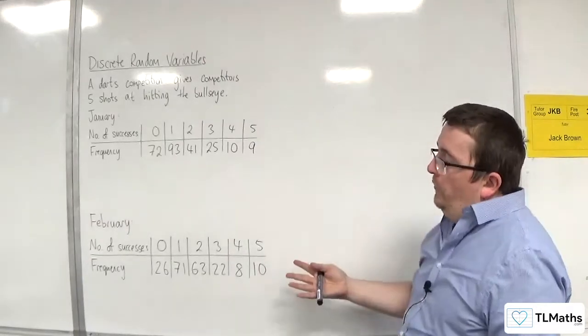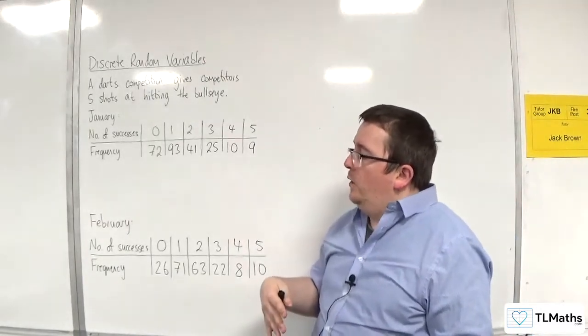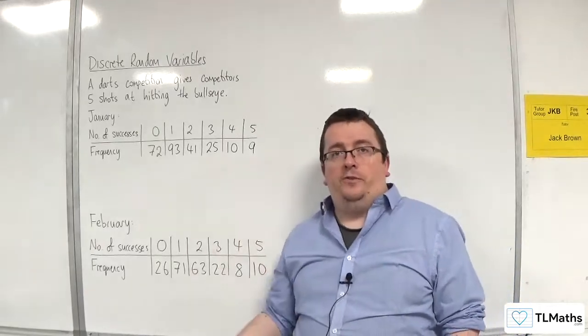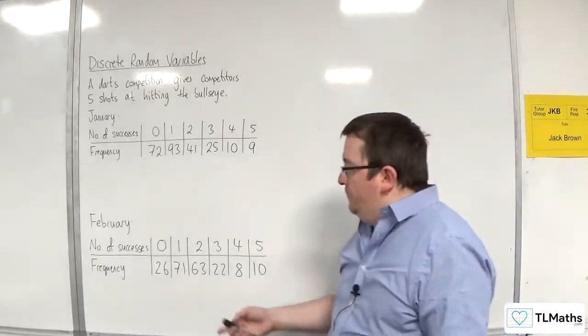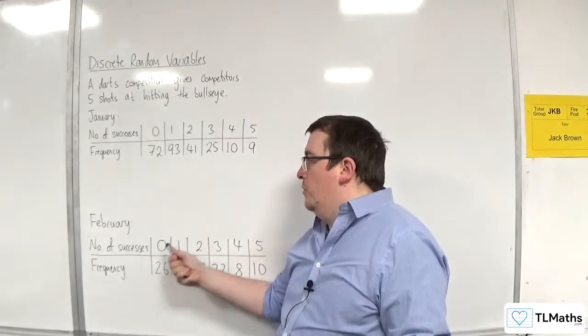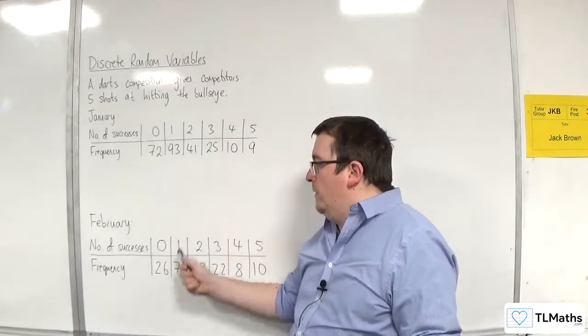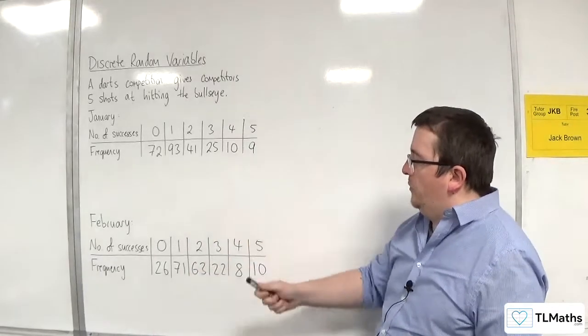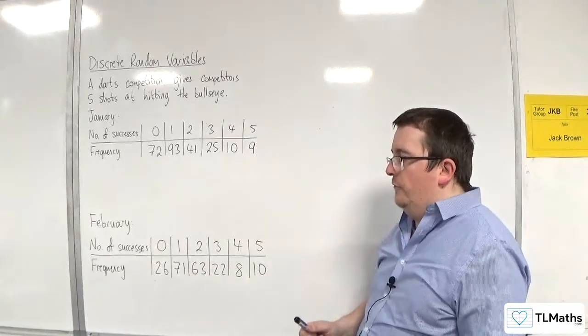What they want to do is determine whether the practice round helped. Here you've got 26 people got no bullseyes, 71 got one, 63 got two, 22 got three, 8 got four, and 10 got five.